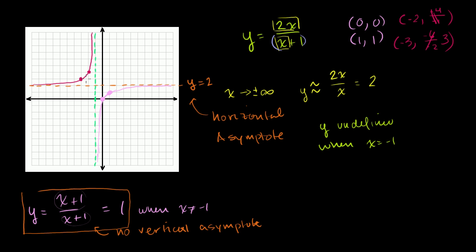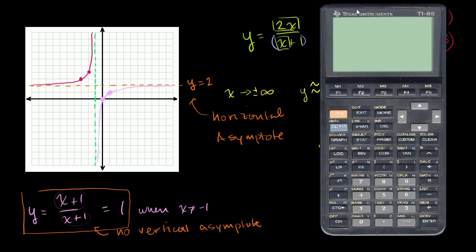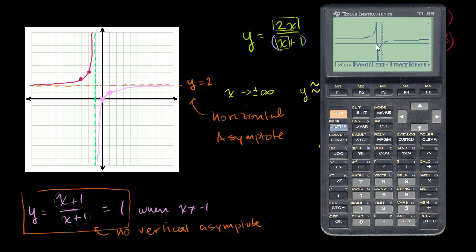So as we approach negative infinity, we approach our horizontal asymptote from above, and as x approaches negative 1, we pop up to positive infinity. Let's verify this with the graphing calculator — define y as 2x divided by x plus 1 and graph it. There we go, it looks just like what we drew. The graphing calculator connected the dots near the vertical asymptote, but we know it's not defined there — it's just making a detailed table of values and connecting all the dots, so it doesn't know that's an asymptote.